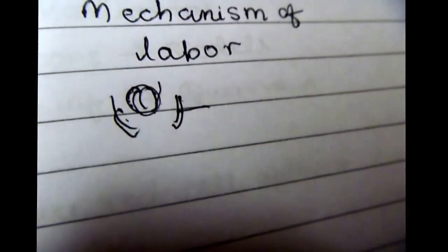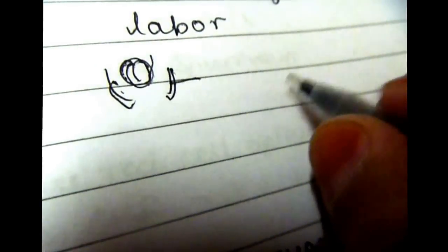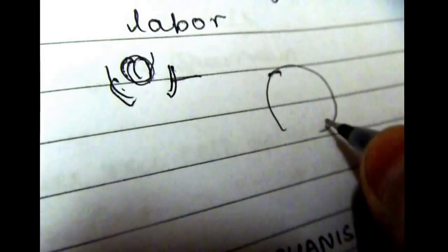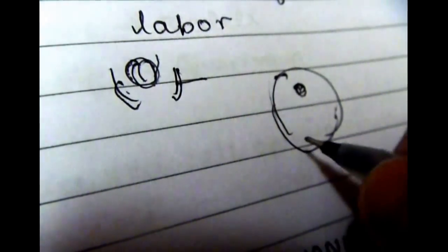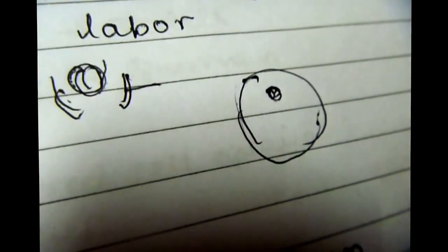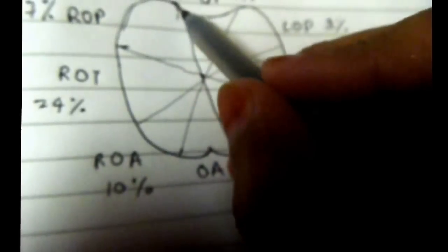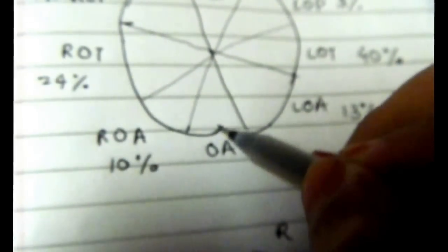The things you need to know prior to the mechanism of labour is position — the relation of the denominator to the different quadrants of the pelvis. The denominator is an arbitrary fixed bony point on the presenting part, and the presenting part is the part of presentation that overlies the internal os. This is a diagram of the maternal pelvis with the sacrum and the pubis labeled.